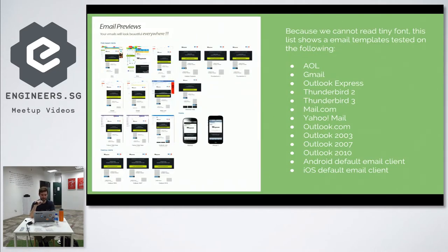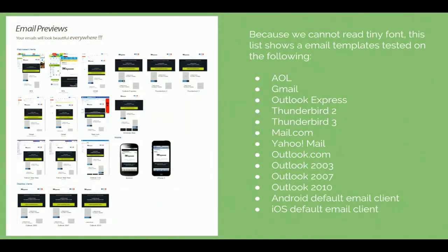Another example - I pulled this off a ThemeForest page for an email template, and they're showing you that it works in a variety of different email clients. I squinted and found in this list: AOL, Gmail, Outlook Express, Thunderbird, different versions, all your Outlooks, web-based clients, desktop clients on Mac and Linux. The same way that when building a website you need to test on Internet Explorer, Firefox, Chrome, and Safari - when it comes to email, there are a lot more platforms and it's less well understood.